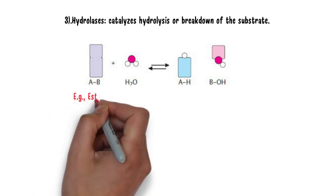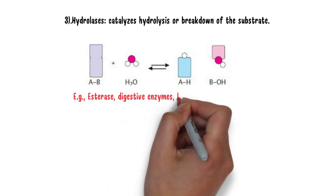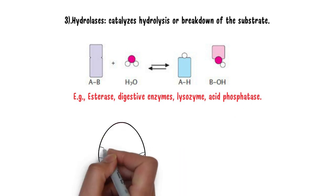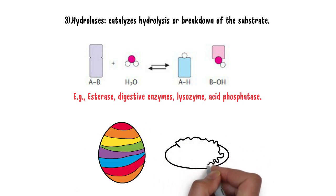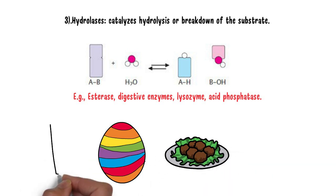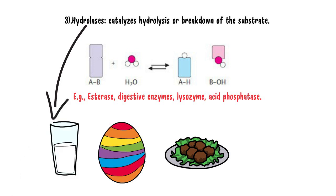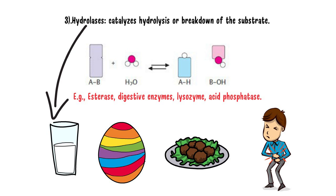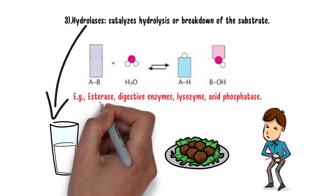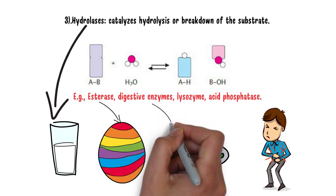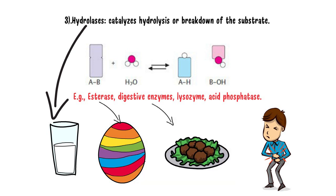The next category is hydrolases. Hydrolases are enzymes that catalyze hydrolysis or breakdown of the substrate. The examples of this category are esterases, digestive enzymes, lysozyme, and acid phosphatases. To remember these examples, just remember the simple story: on Easter you ate a lot of food and water — 'hydro' will help you remember these are hydrolases examples. Because you ate so much, your digestive enzymes are now breaking down the food, and because of the food you got acidity. So 'Easter' helps you remember esterases, 'digestive enzymes' reminds you of digestive enzymes and lysozyme, and 'acidity' helps you remember acid phosphatases.